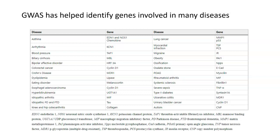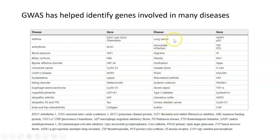GWAS has helped identify genes involved in several different diseases. Genome-wide association studies have been done on arthritis, Crohn's disease, different cancers, bipolar disorder, and even eating disorders. By comparing people who have these illnesses to controls who don't, we've been able to identify several genes involved in these diseases — including other types of arthritis, type 2 diabetes, ulcerative colitis, and even autism, which has had one or two genes identified through GWAS.